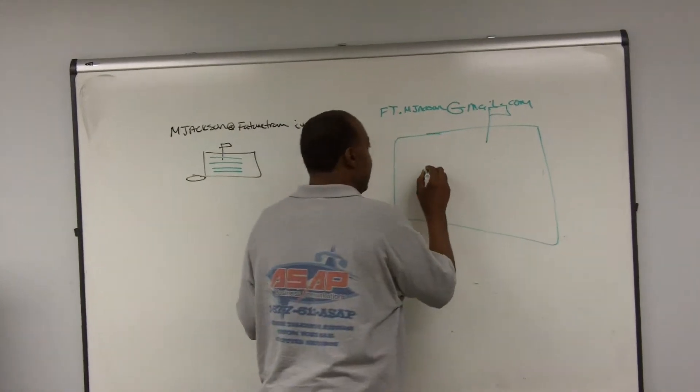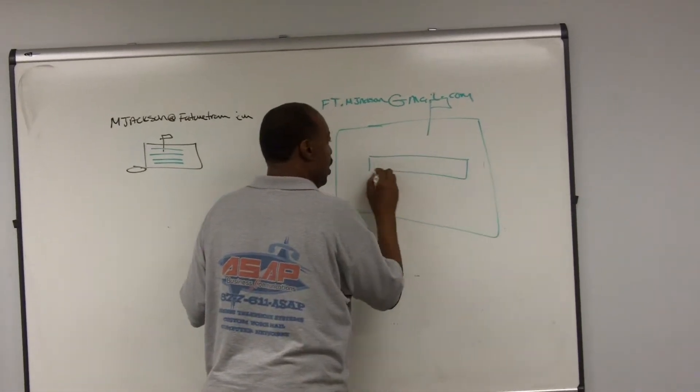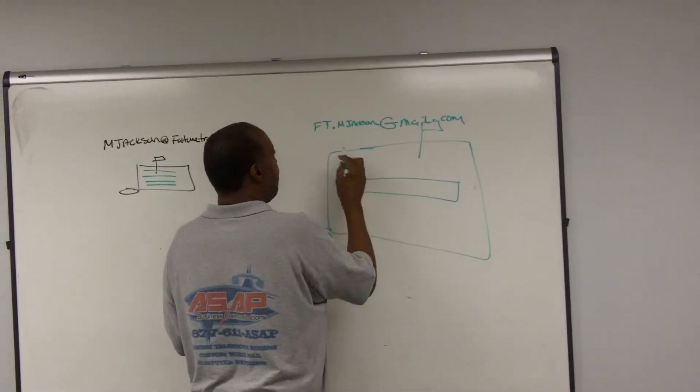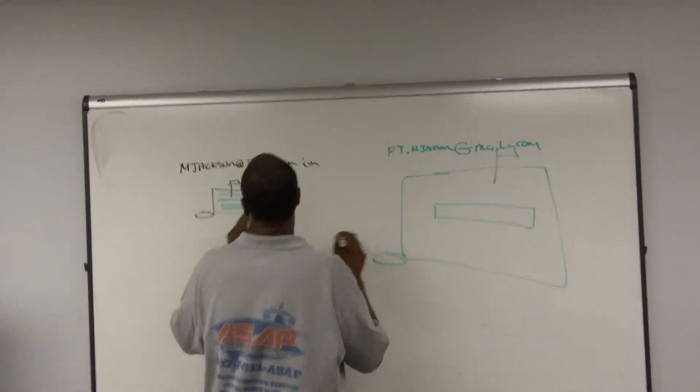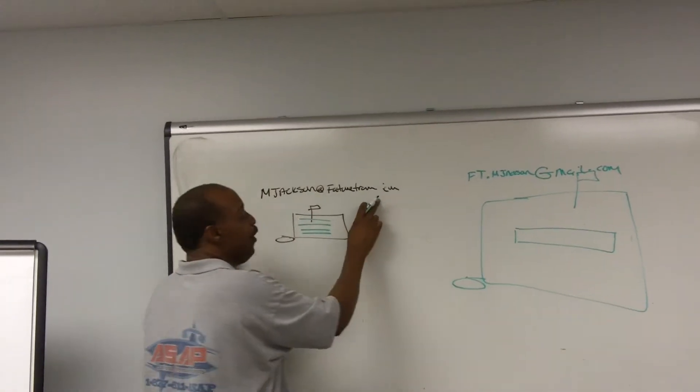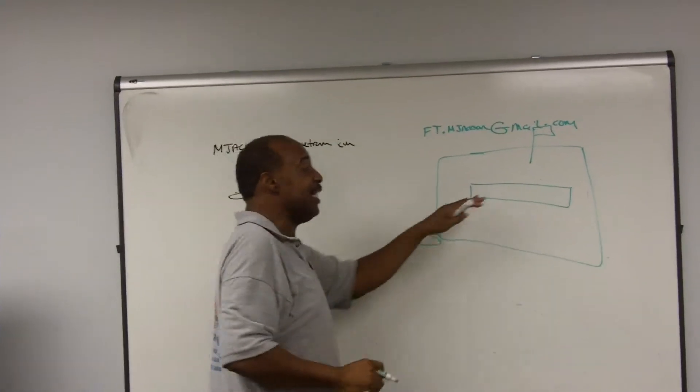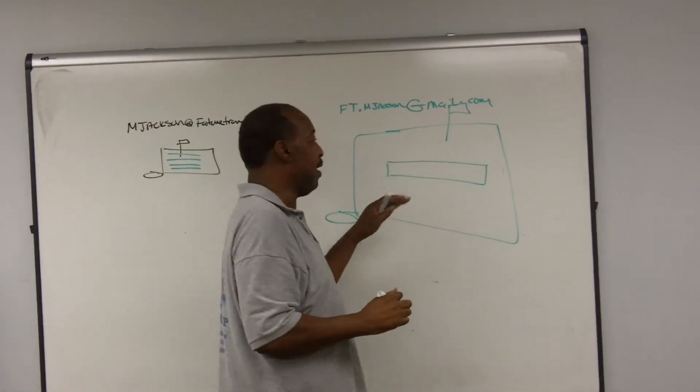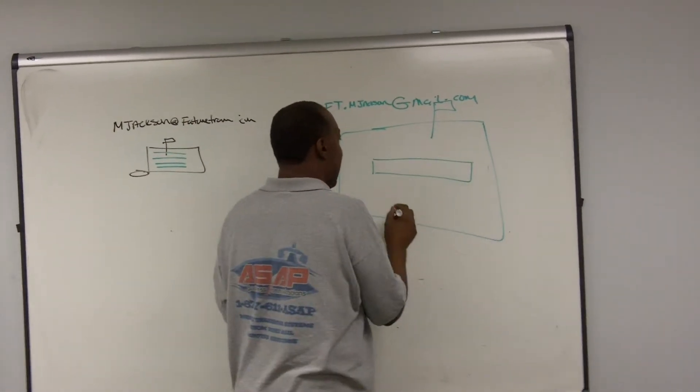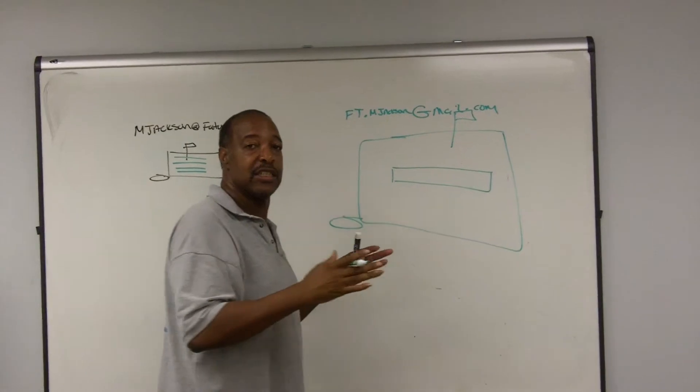Now, when you log in and you do a compose, there will be a drop-down menu that you can use this email address or your Future Transitions email address. And the default is the Future Transitions email address. So all you're going to do is select that and send your messages as normal.